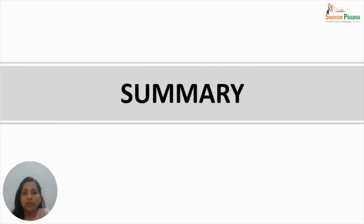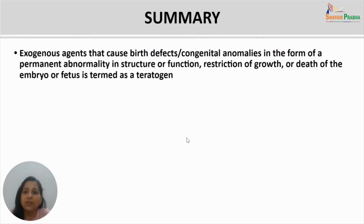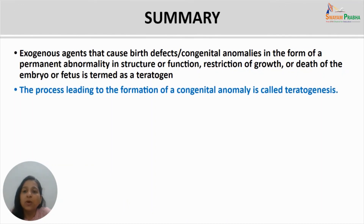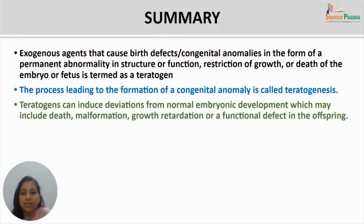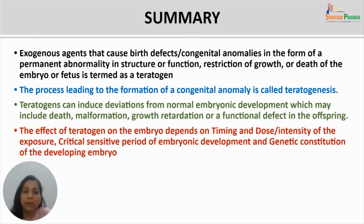To summarize, exogenous agents which cause birth defects or congenital anomalies in the form of a permanent abnormality in structure or function, restriction of growth, or death of the embryo or fetus are termed teratogens. The process leading to the formation of a congenital anomaly is called teratogenesis. Teratogens induce deviations from normal embryonic development which may include death, malformation, growth retardation, or a functional defect. The effect of a teratogen depends on timing and dose or intensity of exposure, with the critical sensitive period being organogenesis and differentiation when the embryo is most vulnerable.